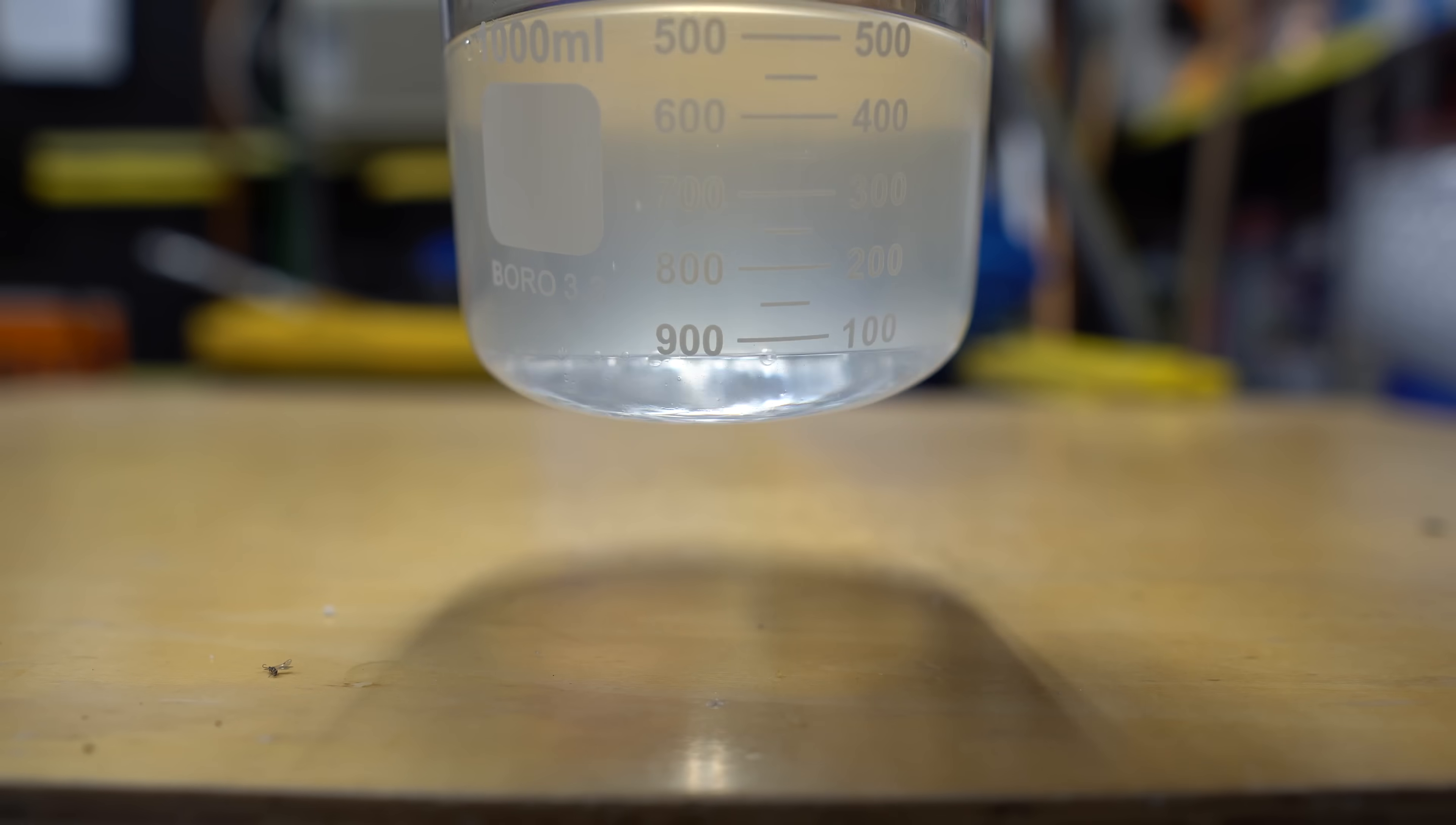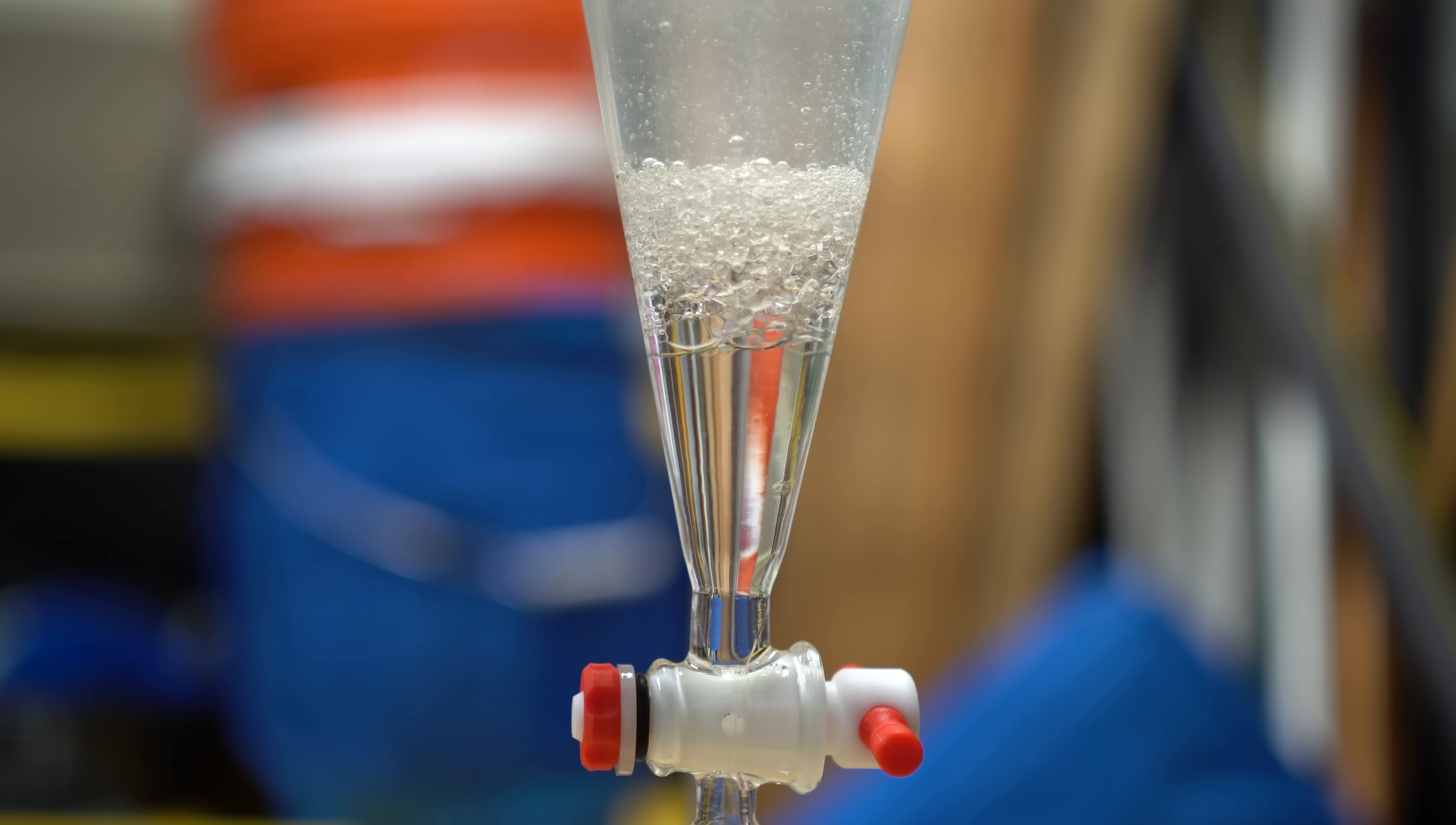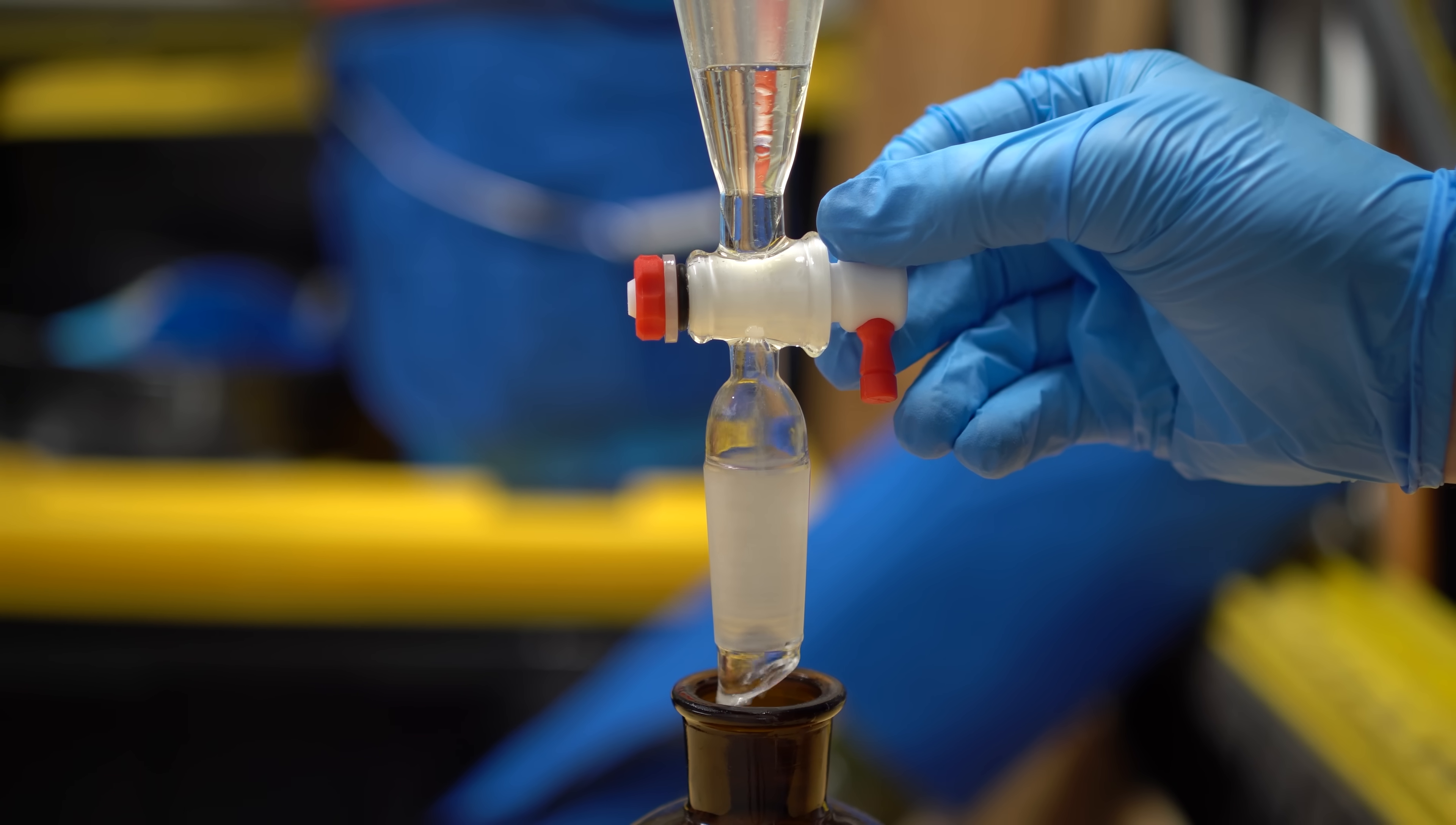Again, chloroform is a lot more dense than the bleach solution, so everything should be on the bottom, ready to be separated again in the separatory funnel. Please do not judge me for the actions you're about to see right now. This is definitely the worst way that I could have set this up. Just like before, we're going to fully drain the bottom layer and collect that into a glass vial, and then we're going to add anhydrous magnesium sulfate to fully dry the chloroform.